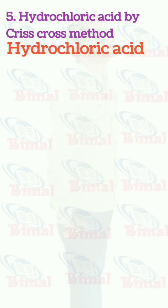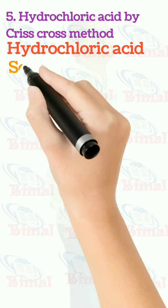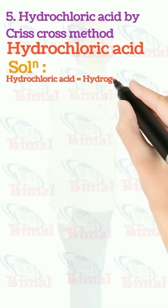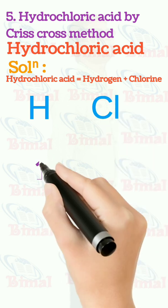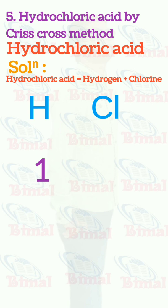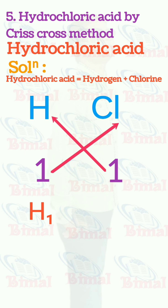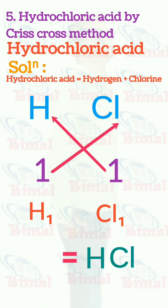Molecular formula of hydrochloric acid by criss-cross method. Hydrochloric acid is equal to hydrogen plus chlorine. Symbol for hydrogen is H, symbol for chlorine is Cl. Valency of hydrogen is 1, valency of chlorine is 1. When we do criss-cross, the valency is exchanged and we write H1 and Cl1, which is equal to HCl. We do not write the 1, so we simply write HCl, which is the molecular formula for hydrochloric acid.